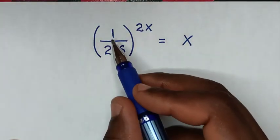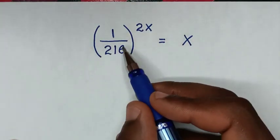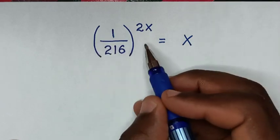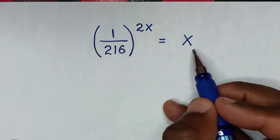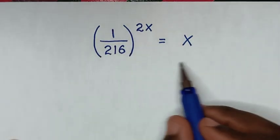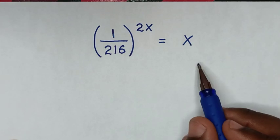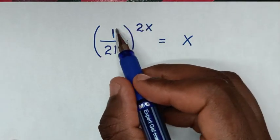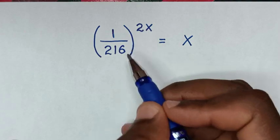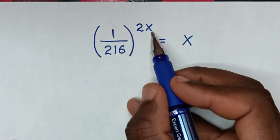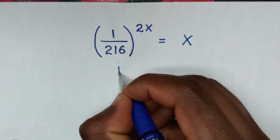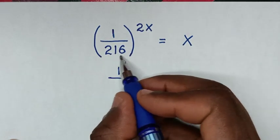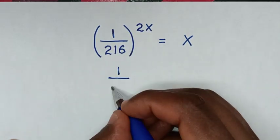Hello. How to solve (1/216)^(2x) = x, to find the value of x from this equation. First we take the power of 2x inside the bracket, so it will be 1^(2x), which is the same as 1, then over 216^(2x).